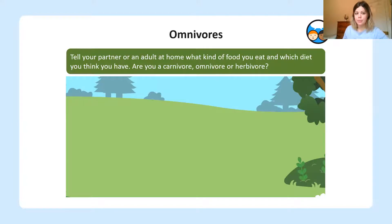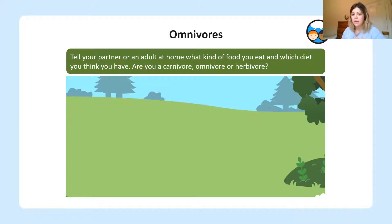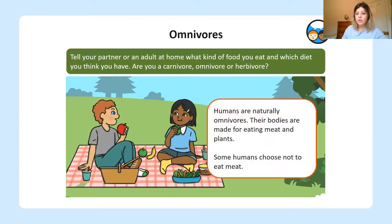What I would like you to do now is talk to the person next to you or an adult at home. Or if you're watching the video on your own, just have a think — what kind of food do you eat, and which diet do you think you have? Are you a carnivore who only eats meat? Are you a herbivore who just eats plants and fruits and vegetables? Or are you an omnivore who eats both? Humans are naturally omnivores, and our bodies are made for eating both plants and meat, though some humans choose not to eat meat.